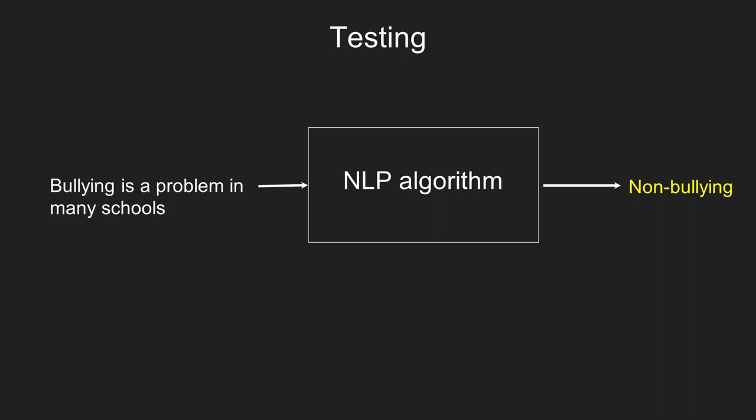Once trained, our machine will be able to quickly analyze and identify bullying content across potentially thousands or millions of examples. This is a great way to assist humans in identifying online bullying content immediately and to take action before it becomes harmful to individuals and society.